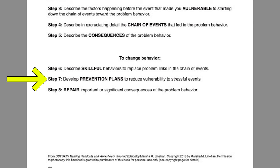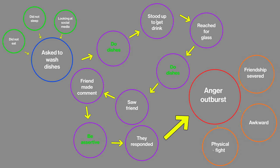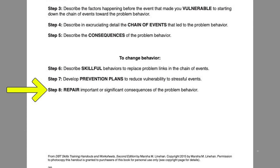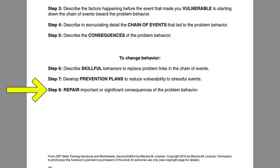Step seven is to develop prevention plans to reduce vulnerability to stressful events. Think about the vulnerability factors and ways to address them. One of our examples was not getting a good night's sleep, so maybe we begin working on our sleep hygiene. Another vulnerability factor was not eating all day, so maybe we make sure we're eating three times a day or aren't too hungry before engaging in conflict. Step eight is to look at the consequences — what's been done — and decide how you can best repair the situation. If getting into an altercation with your friend was one of the consequences, maybe you go back and have a discussion where you apologize and try to talk through a resolution in a peaceful way.